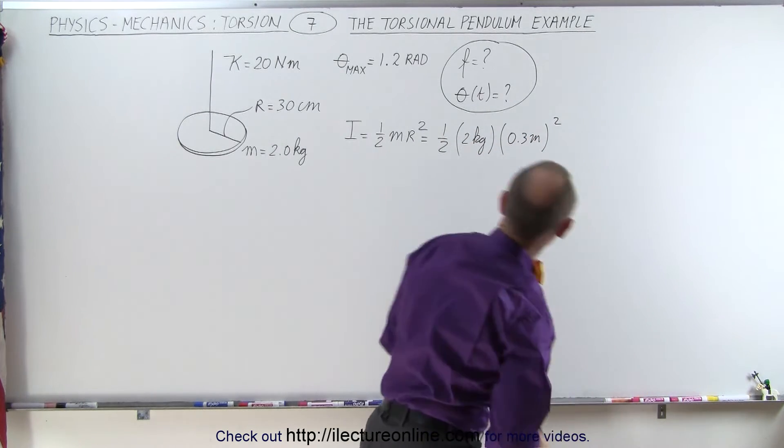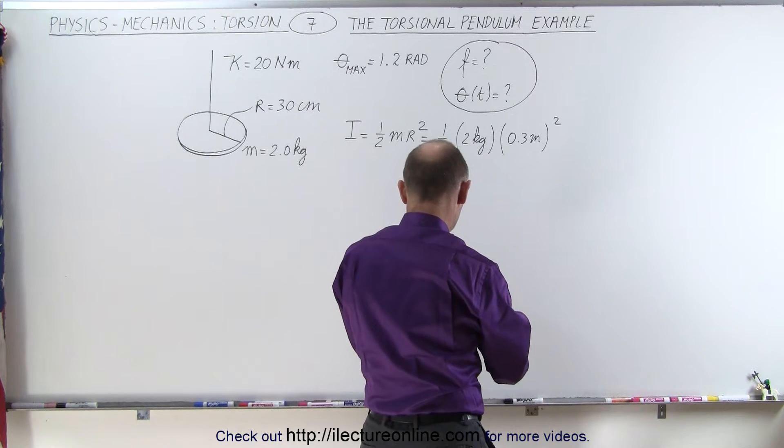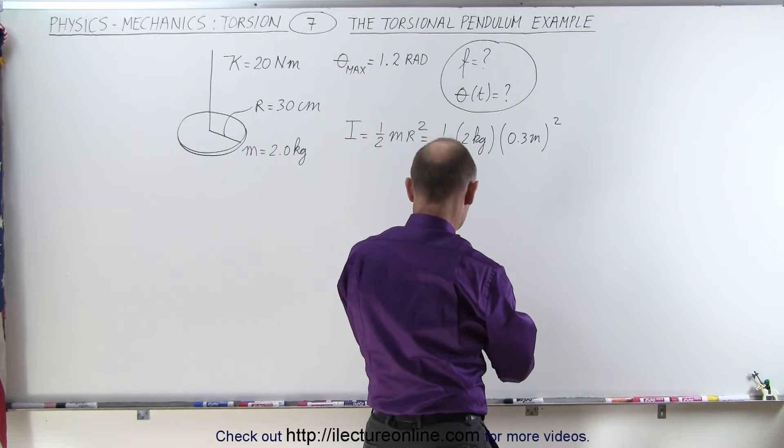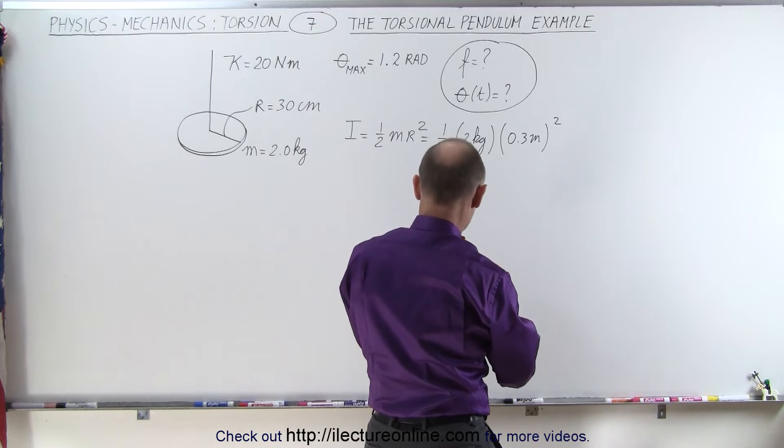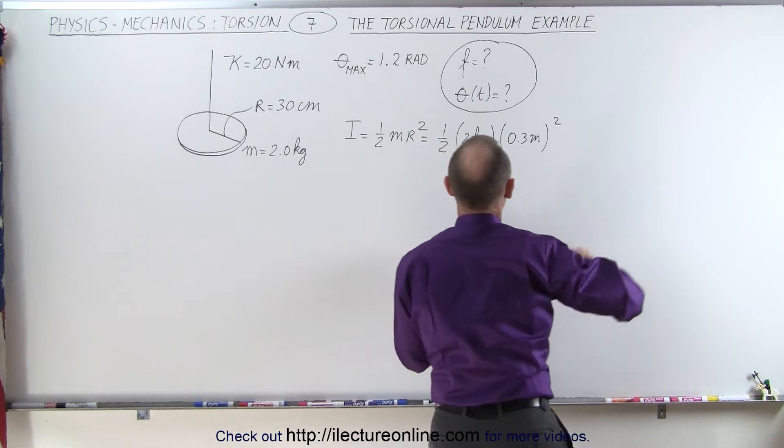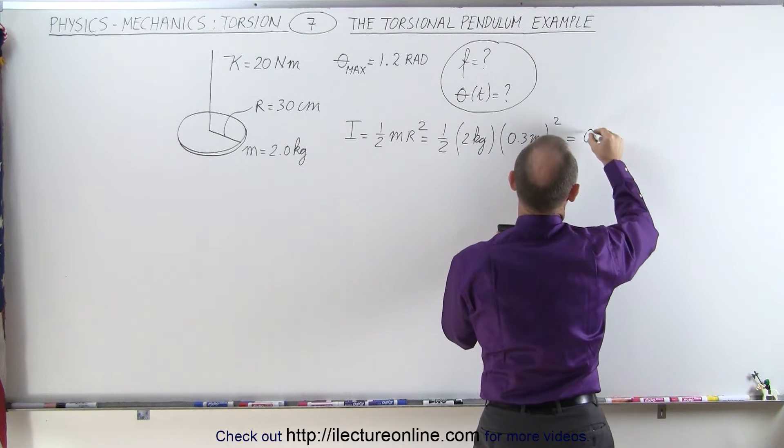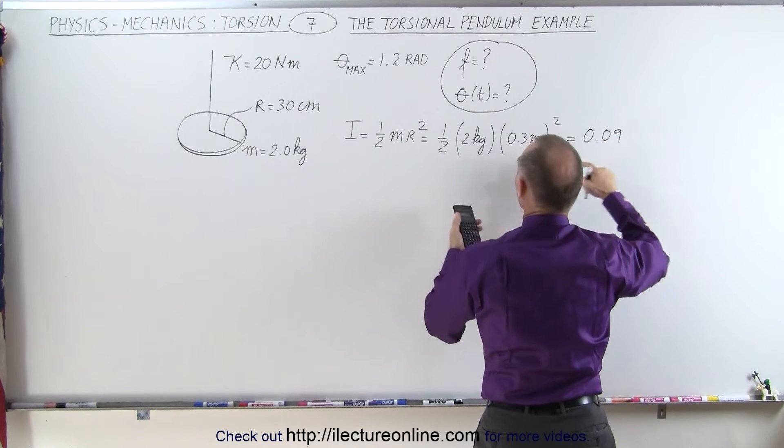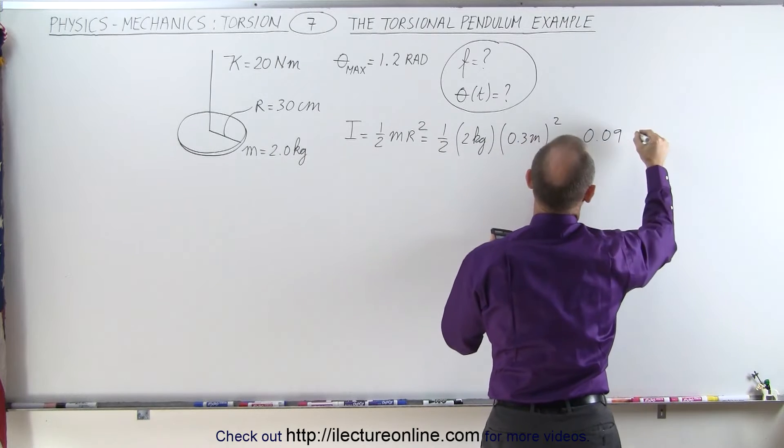So let's find out. We get 0.3 squared times 2, divided by 2, that would be 0.09. So I equals 0.09, and of course the units are kilograms meters squared.